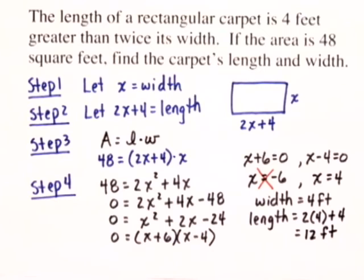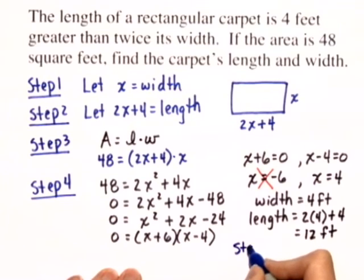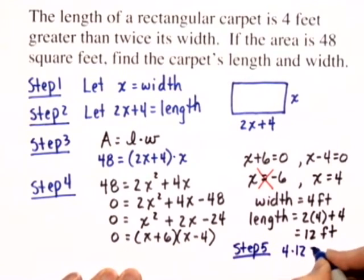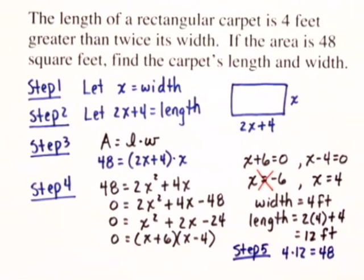Finally, it's a good idea in step 5 to check our solution. We can do a quick check by noting that the width is 4 feet times the length, which is 12 feet, and that does equal 48 square feet if we multiply that out.